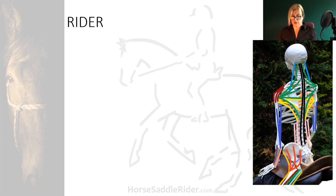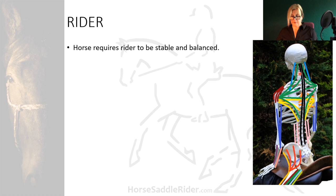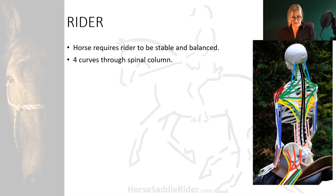Let's consider the rider's back musculature briefly. The horse requires the rider to be stable and balanced, and the rider uses their back muscles primarily to sit still on the moving horse — not easy with four spinal curves at play. The spine is inherently unstable in this vertical position, especially when it has to remain vertical through the pelvis and contact with the seat of the saddle.